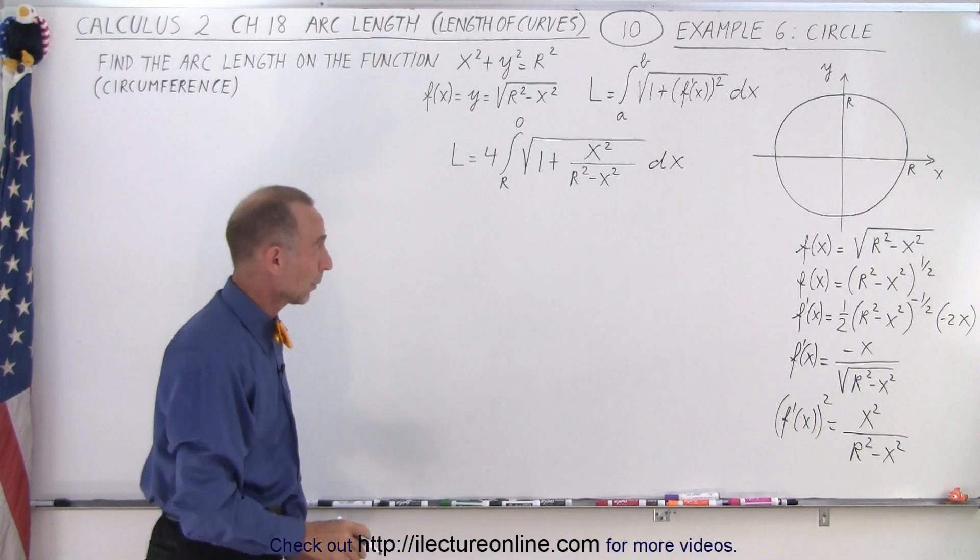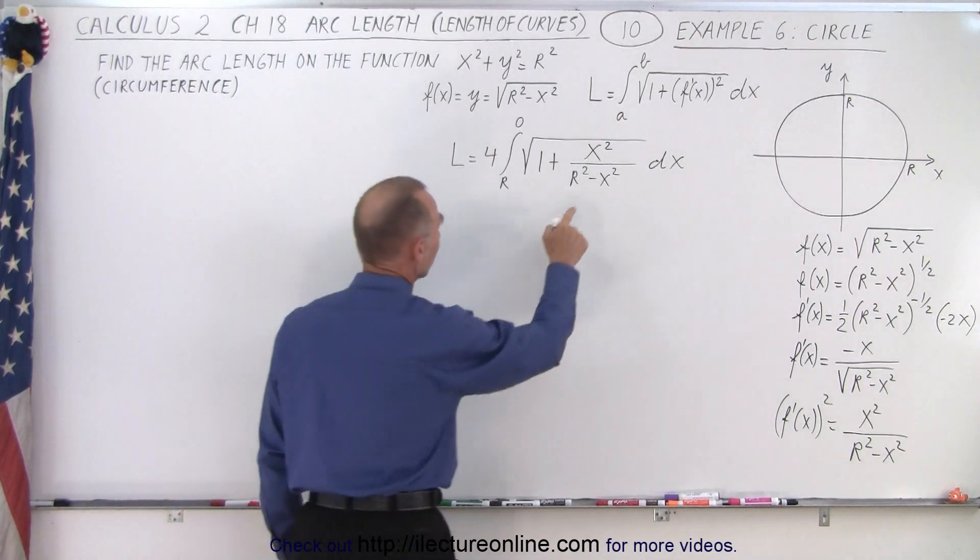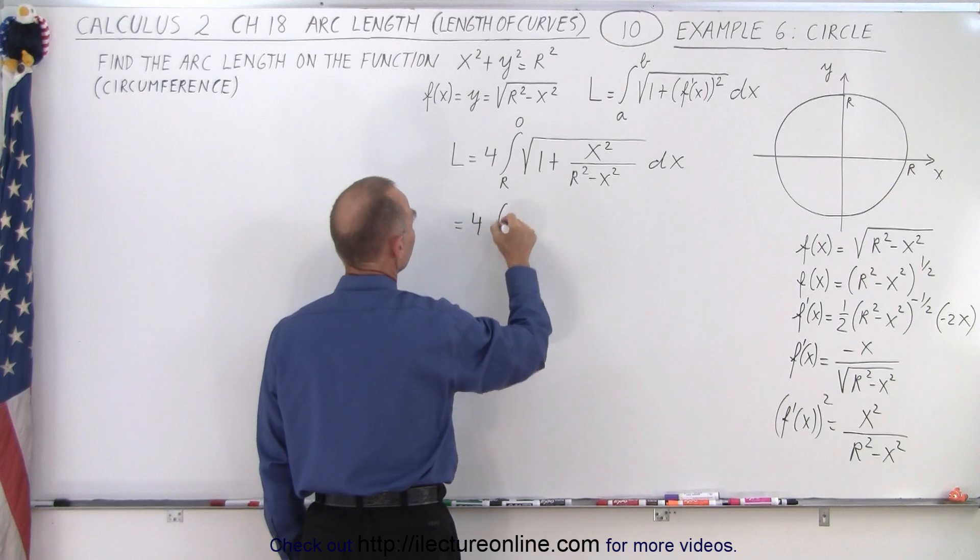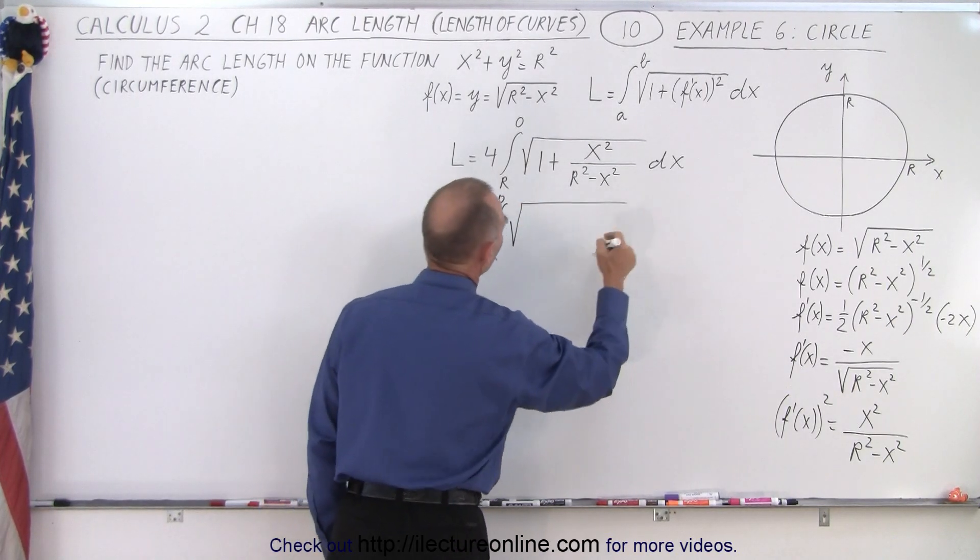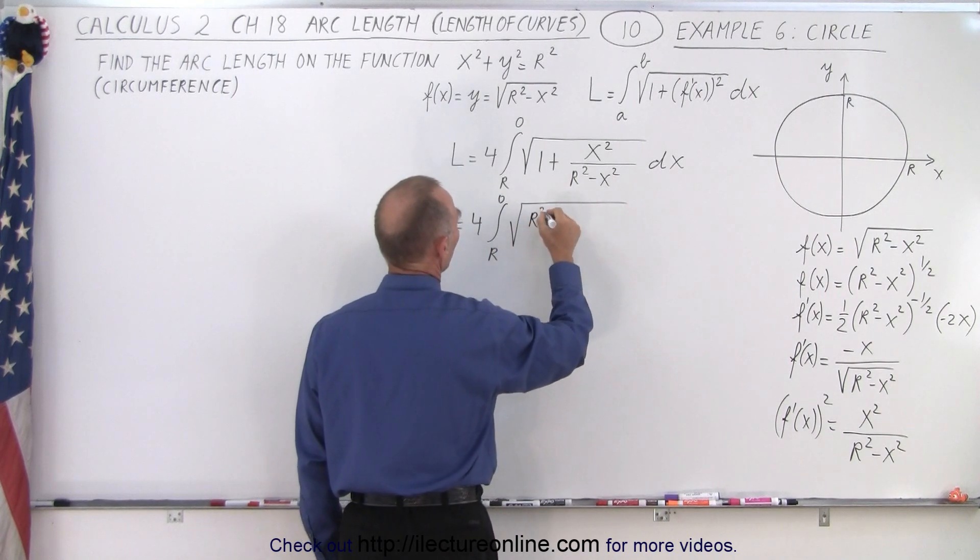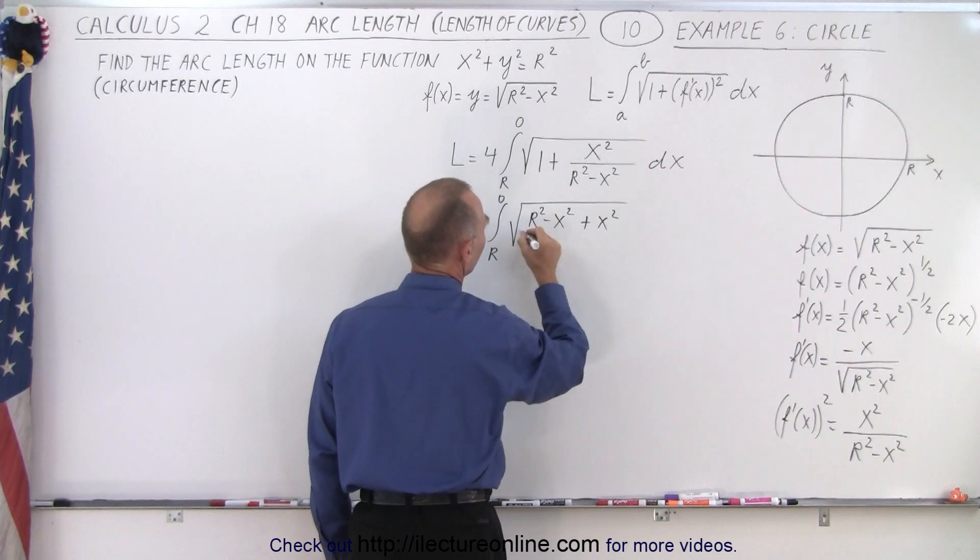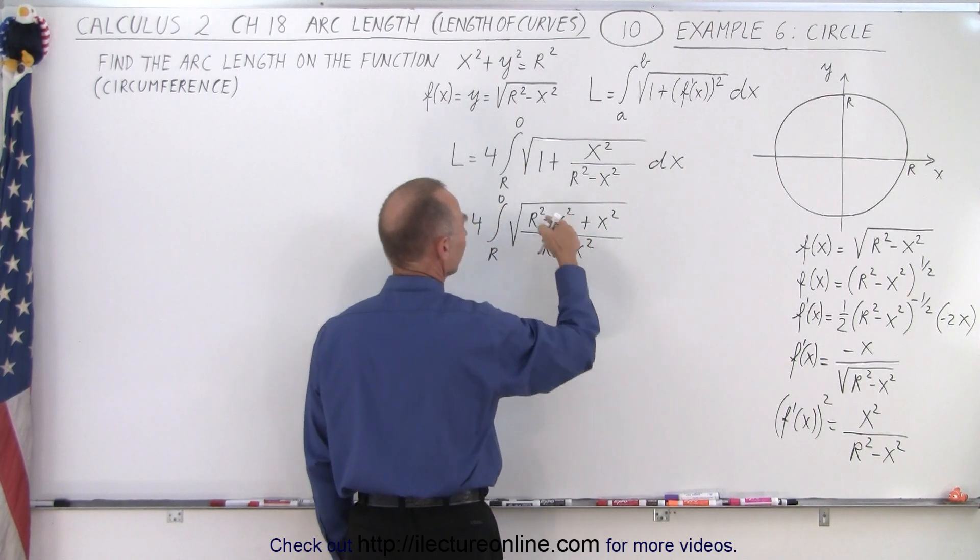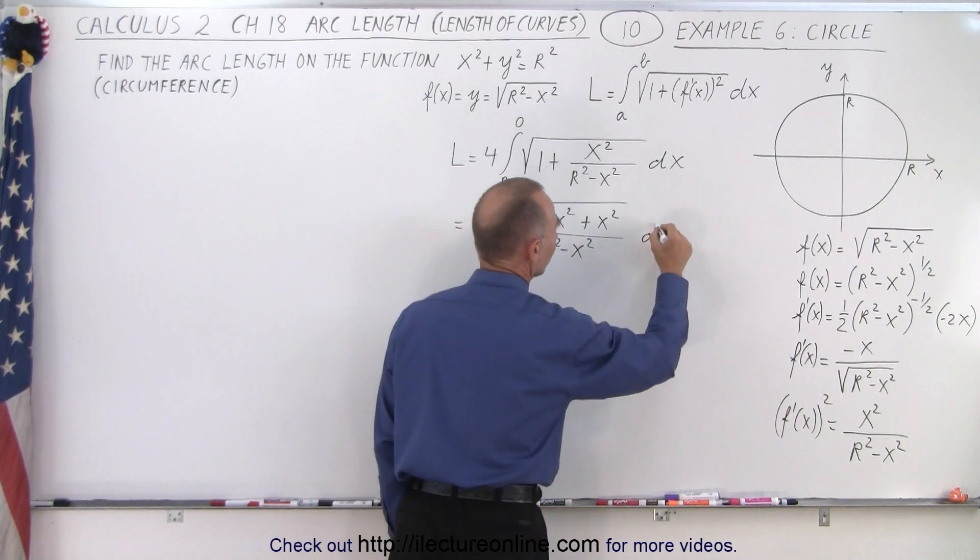Now first you take a look at that and go, wow, how do I integrate that? But we can simplify that algebraically. We can put it all over the common denominator. So this is equal to 4 times the integral from r to 0 of the square root of, now this becomes r² - x² + x² divided by the common denominator of r² - x². Of course if I divide this by this I get to 1 again, so it's the same thing, times dx.